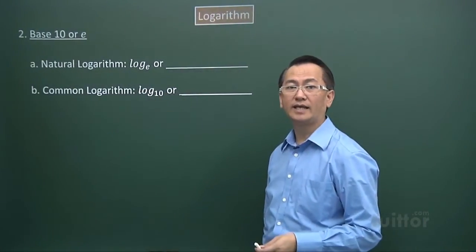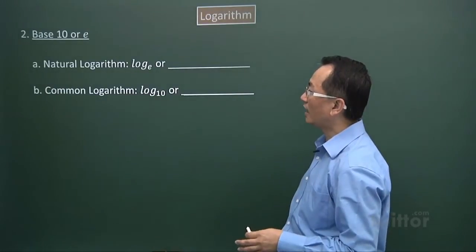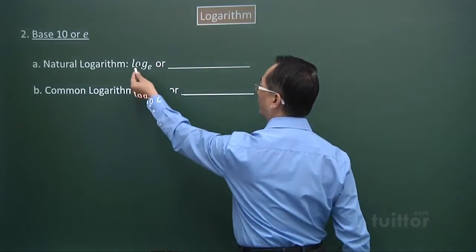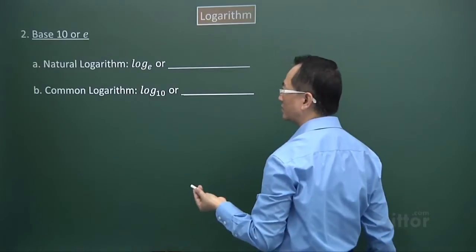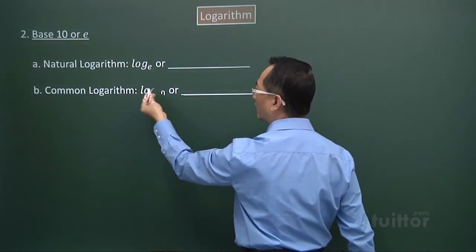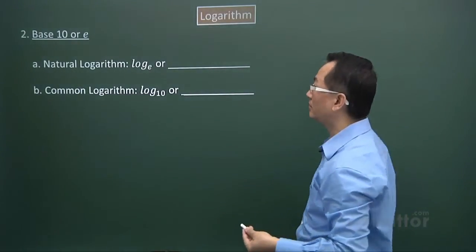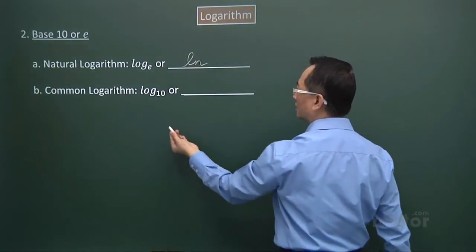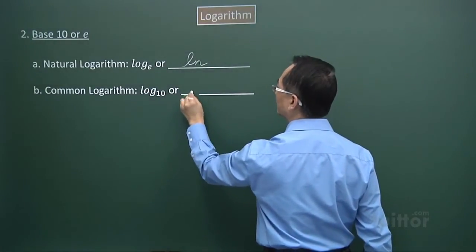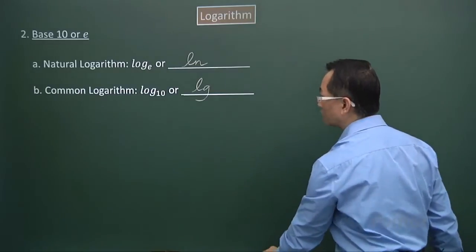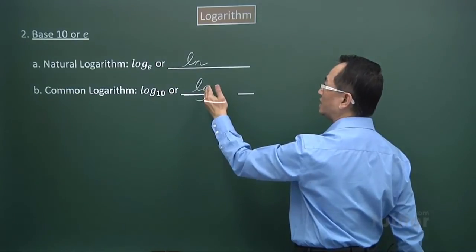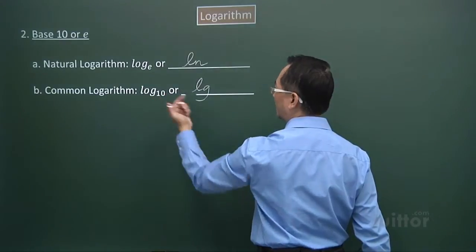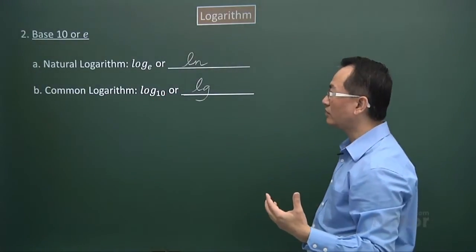In point 2, we look at the natural log and common log — two different bases: base 10 and base e. Log base e is called the natural logarithm; log base 10 is called the common logarithm. The short form for log base e is ln, and log base 10 can be written as lg. When you use these forms, there's no need to write the base since it's understood.